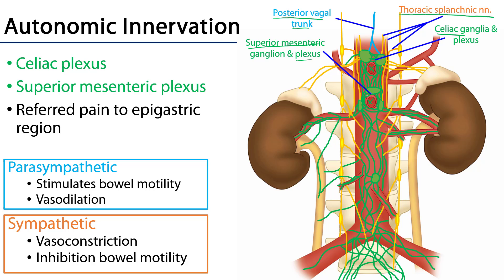Referred pain from the duodenum is transmitted along visceral fibers that accompany sympathetic fibers, and referred pain from the duodenum is referred to the epigastric region. Parasympathetic stimulation stimulates and enhances bowel motility and leads to general vasodilation — rest and digest, resulting in a very active duodenum. Sympathetic stimulation leads to vasoconstriction and inhibition of bowel motility, the opposite of rest and digest.